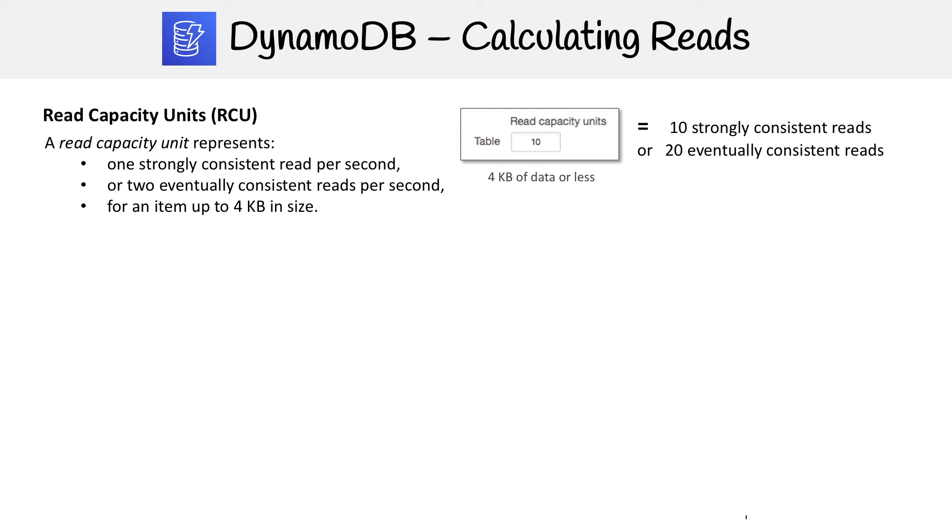But if it shows up in the exam, they're not gonna ask you this stuff, they're gonna ask you how to calculate this number here. And that's what we're going to figure out. But remember that we have consistent reads and strong reads. So we have to have two different formulas for calculating this number here.